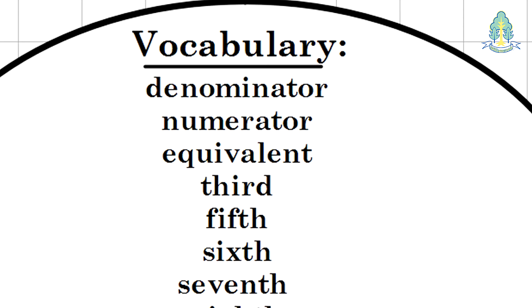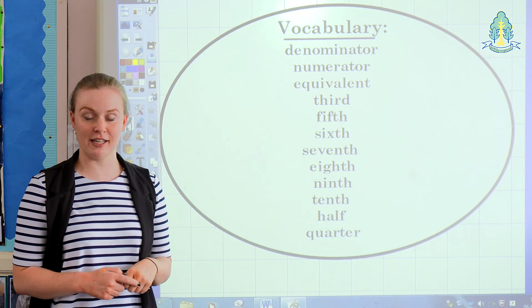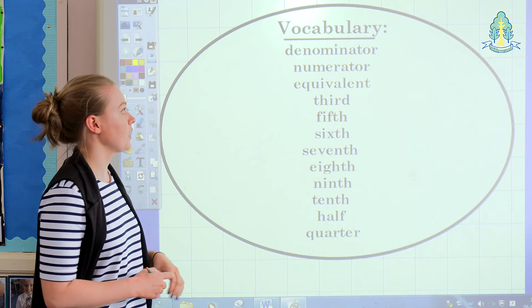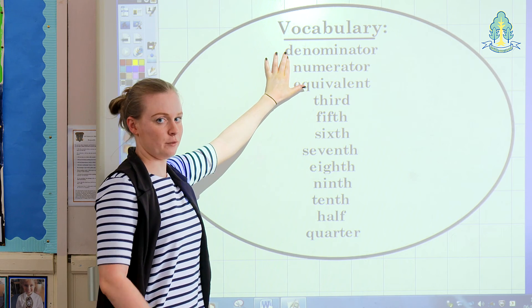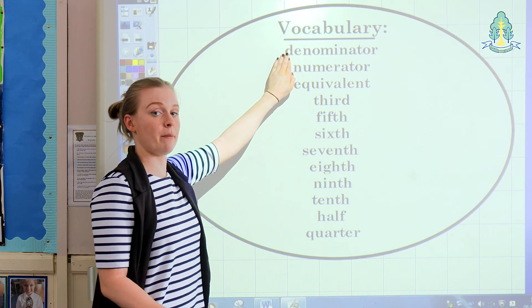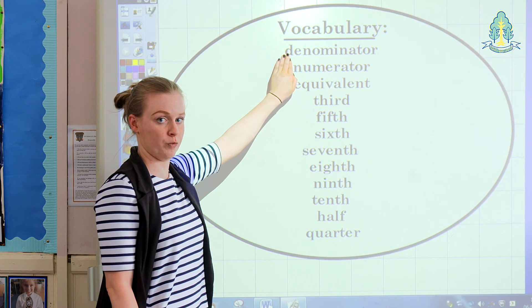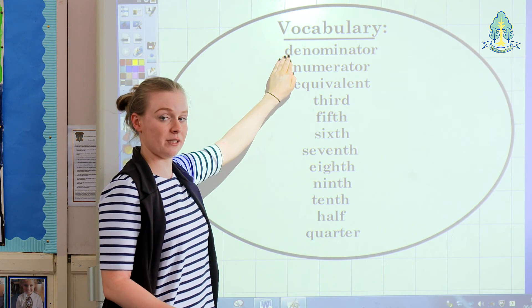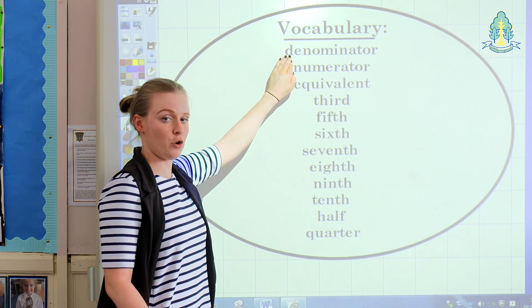This is the vocabulary that children need to have learned by the end of first level when working with fractions. The first one is denominator, which is the number at the bottom of the fraction, which shows the number of parts altogether in the whole. For example, if I had a pizza that was split into 8 parts, the denominator would be 8.